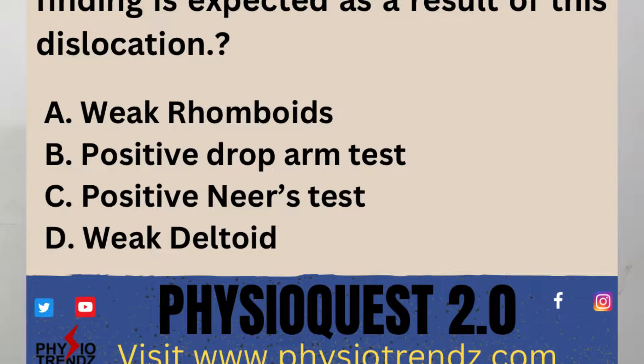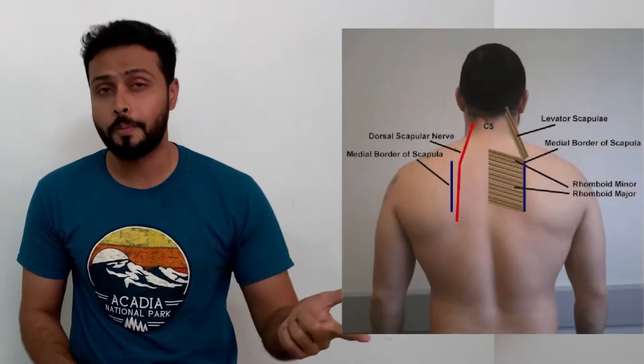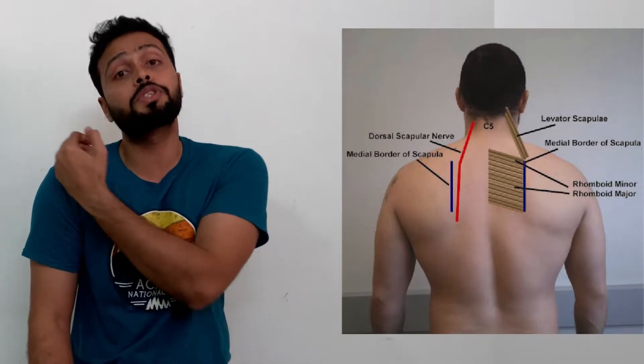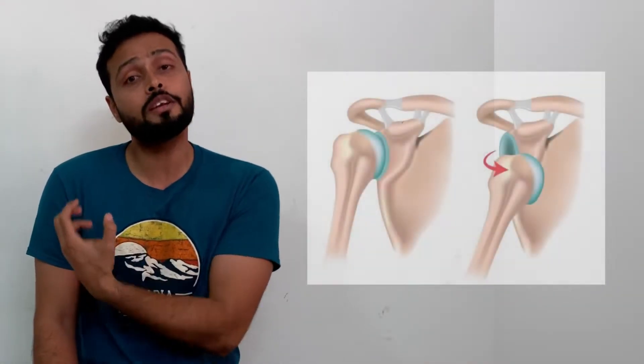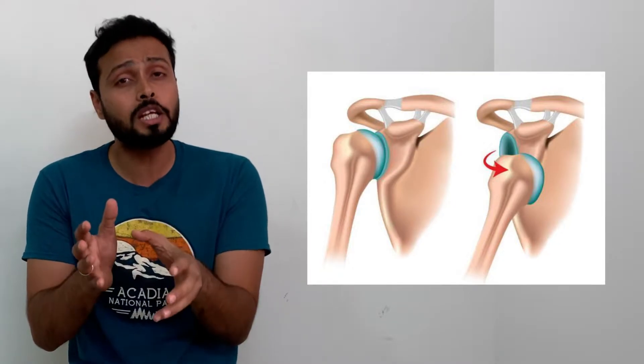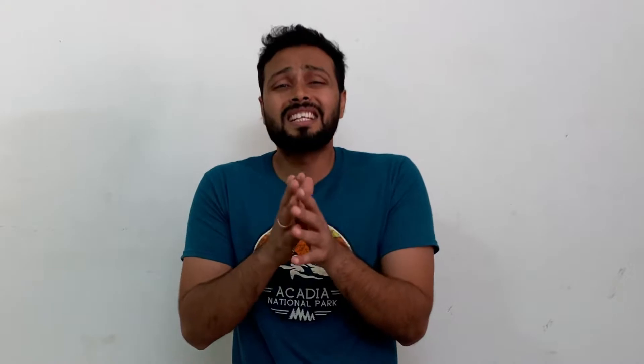Option A says there can be weak rhomboids muscle. The rhomboid muscle is mainly supplied by the dorsal scapular nerve, which, as the name suggests, passes from the posterior side of the head of the humerus. In the current situation, with anterior inferior dislocation, it cannot impinge or compress the dorsal scapular nerve. So there is no possibility that the rhomboids muscle or dorsal scapular nerve can be affected. This option cannot be correct.